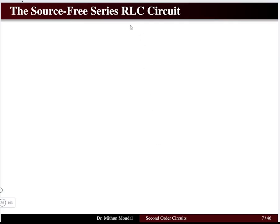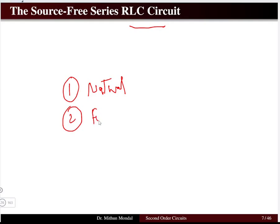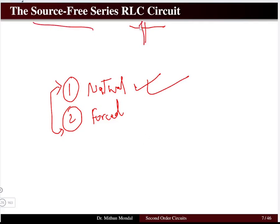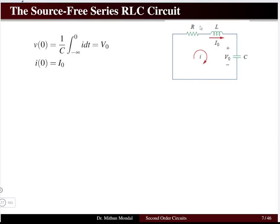Now let us jump to the RLC second order circuit. We categorize circuit responses into two types: the natural response (source-free response), and the forced response where an external voltage source is applied. We will first discuss the natural response — starting with the source-free series RLC circuit.